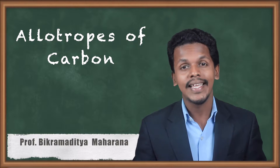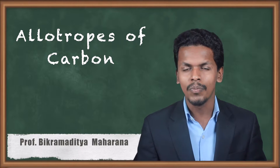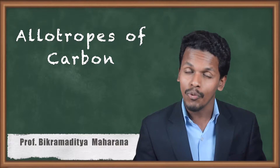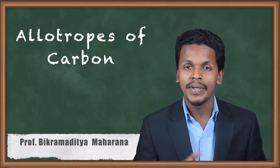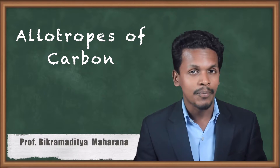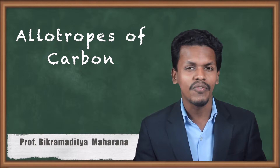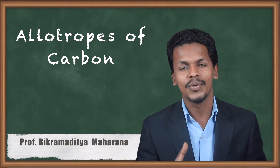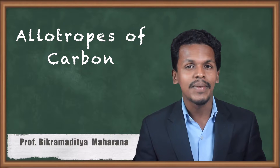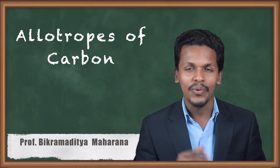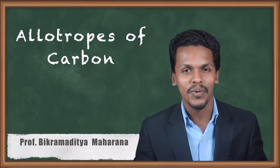In this topic we are going to talk about the allotropes of carbon. What is an allotrope, what is the property of allotropy, why carbon exhibits this property, and why other elements belonging to group 14 do not show as many allotropes — these are the reasons we are going to discuss in this lecture.